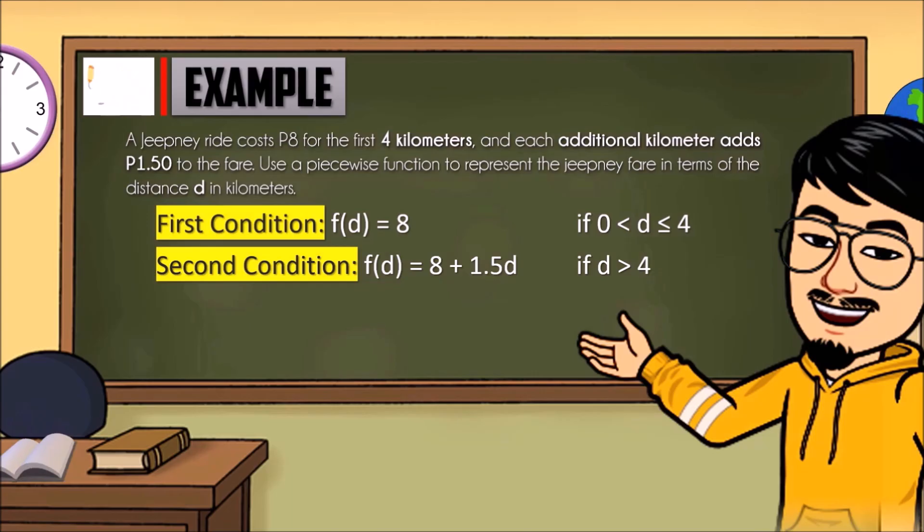Therefore, the final answer would be F of D equals 8 if the distance is less than or equal to 4, and 8 plus 1.5D if the distance is greater than 4 kilometers.